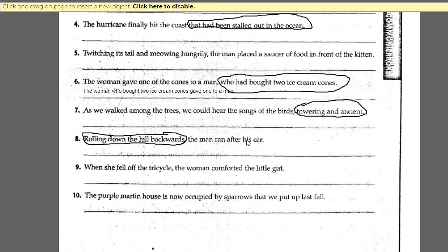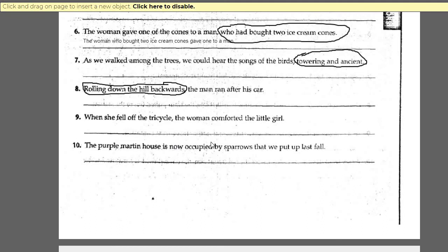'When she fell off the tricycle, the woman comforted the little girl.' The woman did not fall off the tricycle — the little girl did. So you have to move that modifier closer to the little girl. 'The purple martin house is now occupied by sparrows that we put up last fall.' A martin house is a birdhouse, something you put up for birds. The modifier 'that we put up last fall' is too close to sparrows — it needs to modify the birdhouse. So you've got to move it closer.